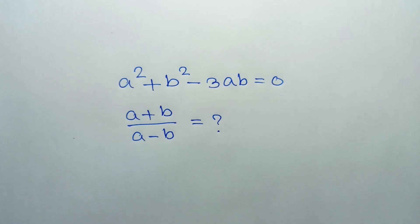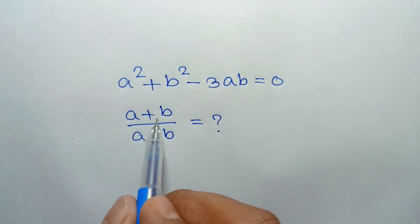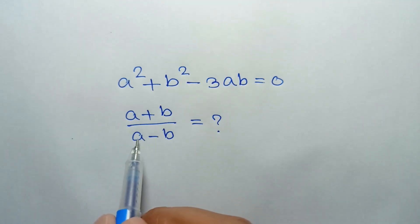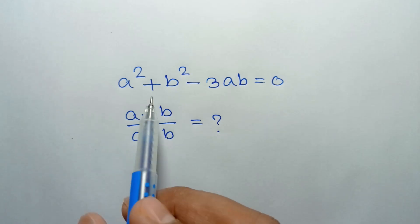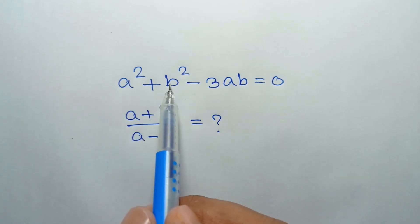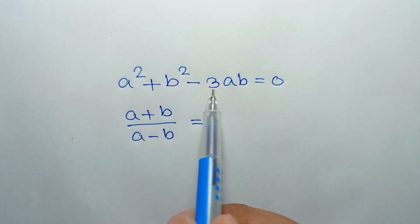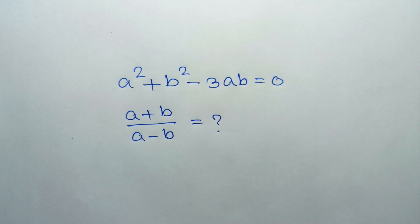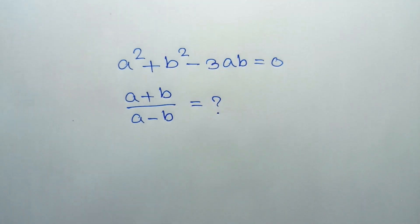Hi everyone. In this video I am going to show how to find the value of (a+b)/(a-b), where a²+b²-3ab is equal to 0.